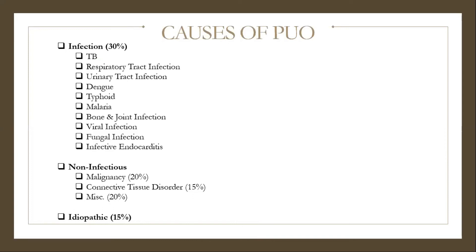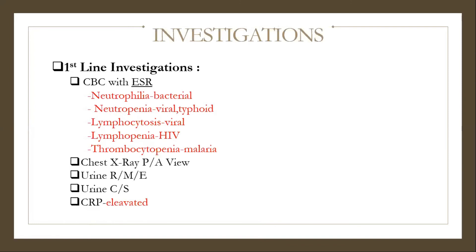Investigations: first-line is complete blood count with ESR. Different findings may indicate different causes. Neutrophilia is mostly due to bacterial infection; neutropenia mostly due to viral and atypical infections; lymphocytosis mostly due to viral causes; lymphopenia mostly due to HIV infection; thrombocytopenia mostly due to malaria. Also: chest X-ray, PFU, urine routine microscopy, urine culture and sensitivity, and C-reactive protein (usually elevated in infection).